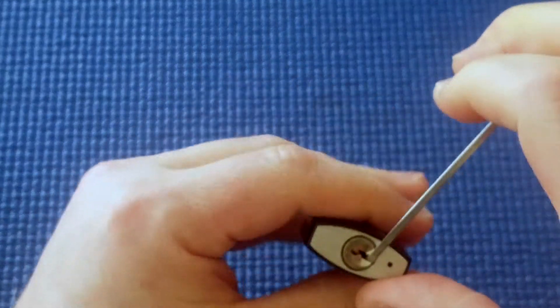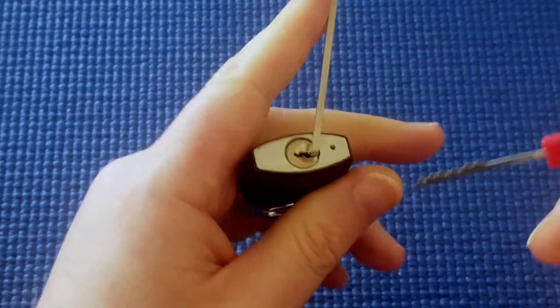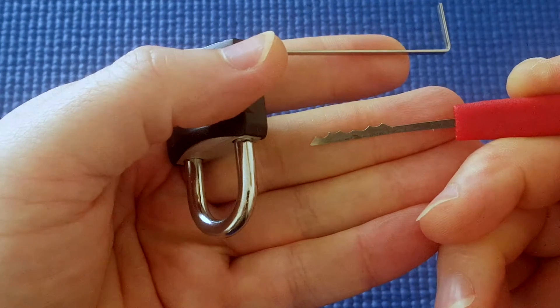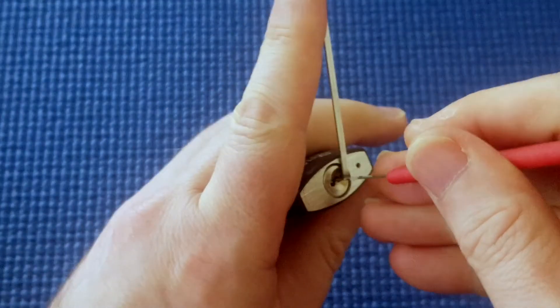This is a tiny lock, so I had to use my smallest tensioner with light tension. I'm going to use this L rake or city rake because I had success with this one.